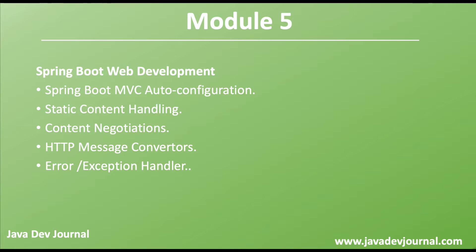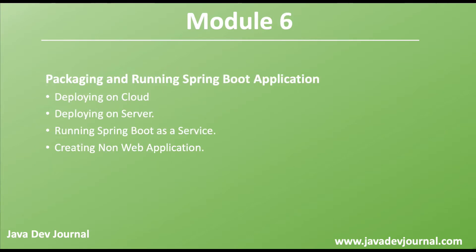Since we are building REST applications, we'll touch on content negotiation — how the REST client and REST API communicate with each other, for example agreeing on JSON as a format. We'll look at HTTP message converters, which are crucial, and how to introduce your own custom converters. We are also going to talk about error handling with the exception handling capabilities built on top of Spring Boot, which provides an additional layer of abstraction on top of Spring MVC.